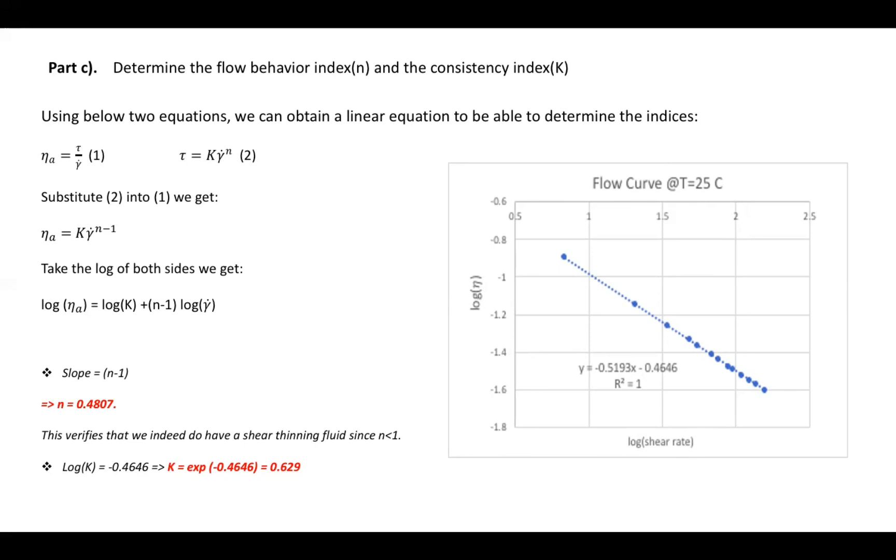So once you're able to plot this graph, the data on this graph, you will see in graph on the right, you see a linear expression where your slope, which represents N minus one, is equal to negative 0.5193. Of course, once you do the simple algebra, you will get that your index N is roughly 0.481. And the cool thing about this is that this actually verifies that we indeed do have a shear thinning fluid. And the reason is because your index is less than one. So that's a really good check to ensure that your data set makes sense. And on the proceeding side, to calculate your consistency index K, the exponential of your y-intercept will give you a value of around 0.63. And that correlates to your consistency index K.